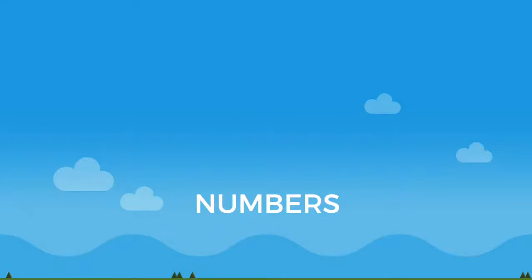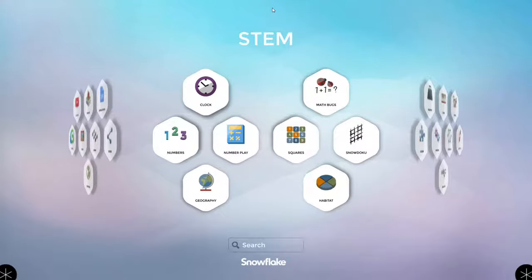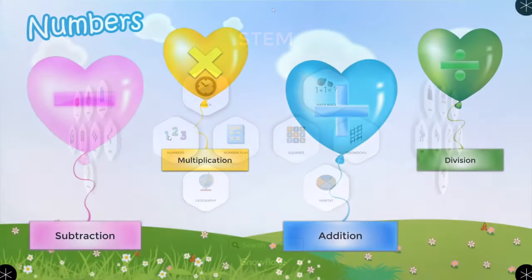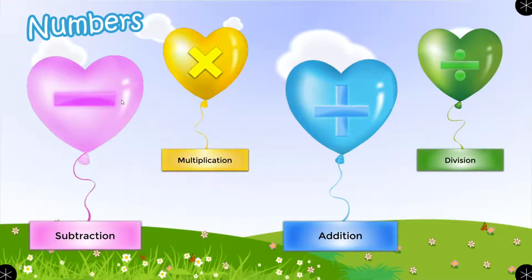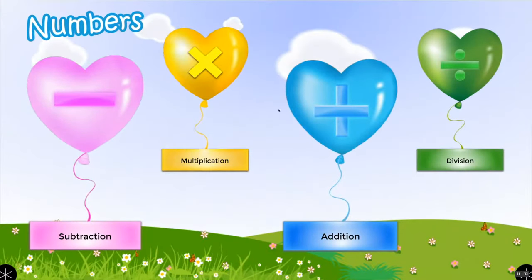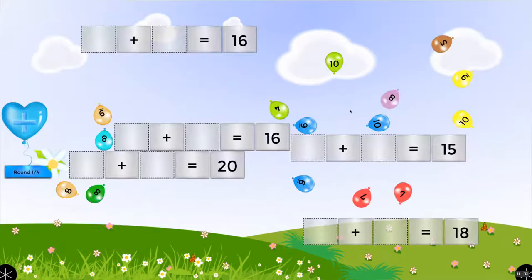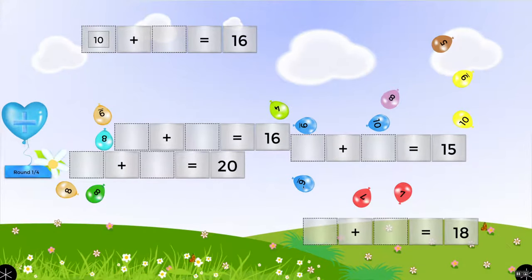The Numbers app is good for reinforcing basic addition, subtraction, multiplication, and division skills. Tap on the Numbers icon to open it. This will lead to a selection screen where you can select an operation. For each operation, students are presented with horizontally oriented math problems. Students move numbered balloons into boxes so that their combined values are equal to the answers in the rightmost boxes.